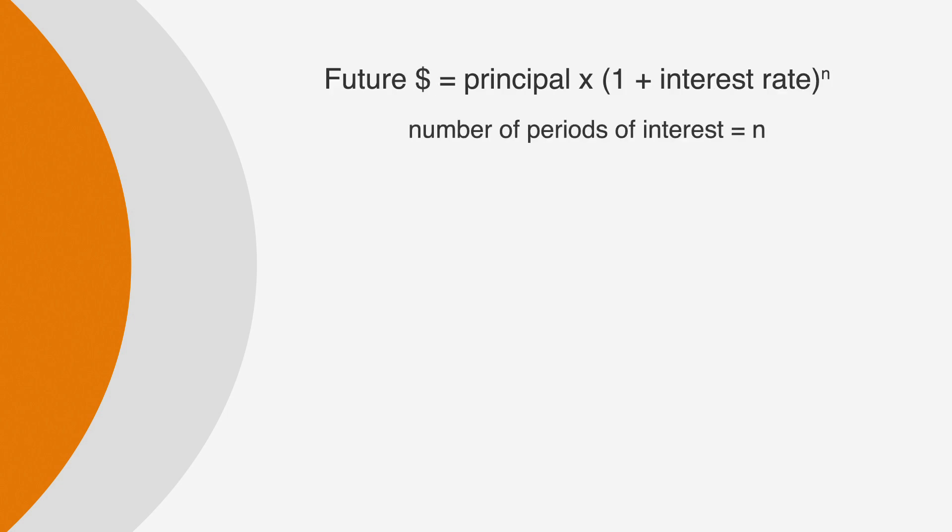There's a formula for basic compound interest that's helpful to know. The money you will earn or owe in the future equals the principal times 1 plus the interest rate in decimal form to the number of periods of interest. We can just simplify that last part as n. In the previous example, we deposited $100 at 3% interest. So we would write 100 times 1 plus 0.03 to the n. We can simplify that a bit to 100 times 1.03 to the n.